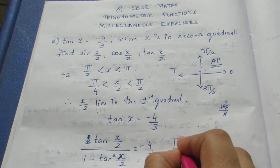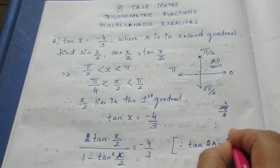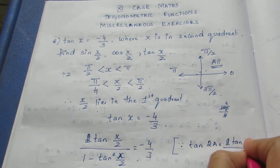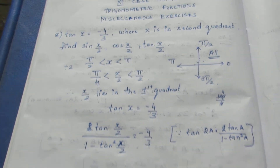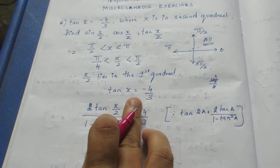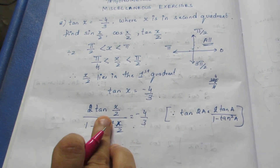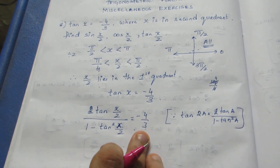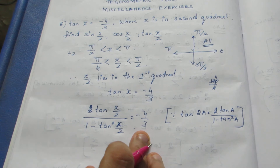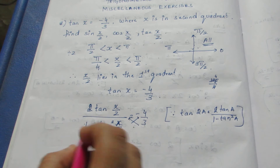I have substituted the double angle formula: tan 2a equals 2 tan a divided by 1 minus tan squared a. Here, instead of a, I have written x/2, so it becomes 2 tan(x/2) divided by 1 minus tan squared(x/2) equal to minus 4 by 3. Now cross multiply both sides.